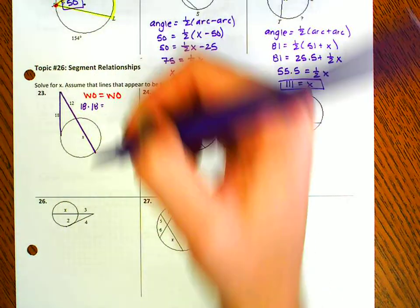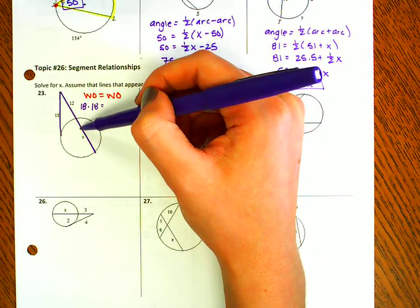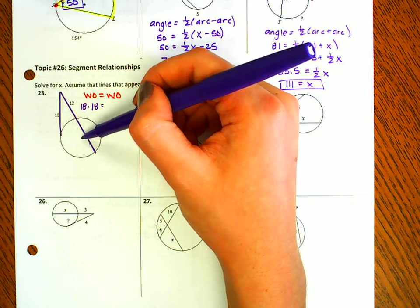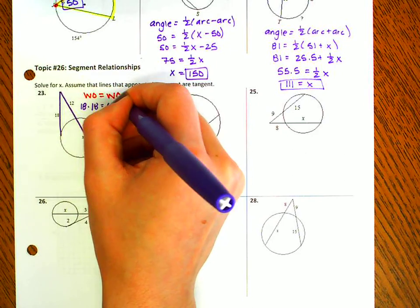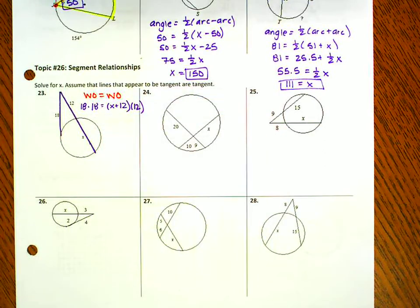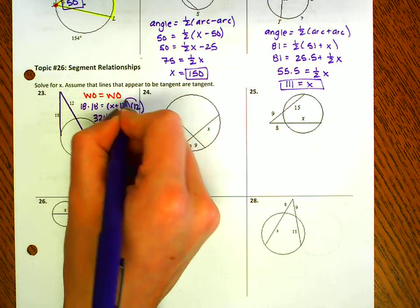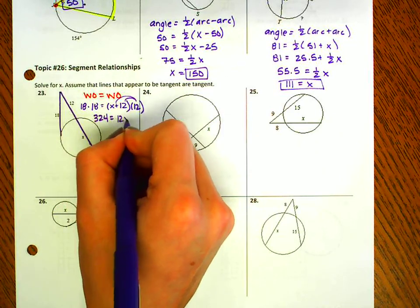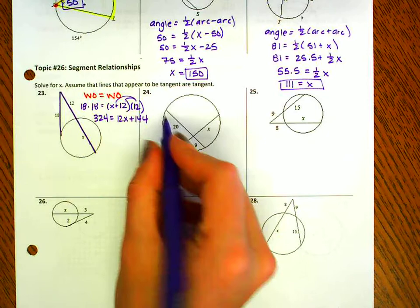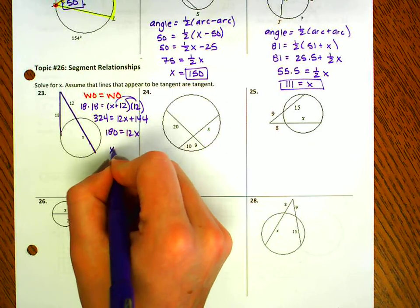This whole segment here is 12 plus x. Think about it — if x was 10 and I was driving, I would drive 10 and then 12, adding those together for a total of 22. So the whole thing is x plus 12, and the outer portion outside the circle is just 12. So 18 times 18 gives me 324. Distributing the 12 gives 12x plus 144. Subtracting 144 on both sides, then dividing by 12 gives me x equals 15.